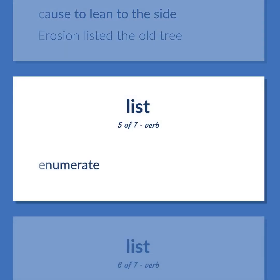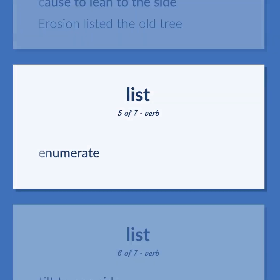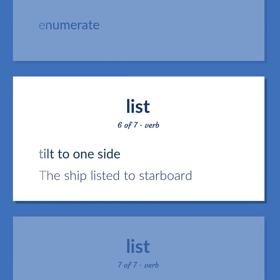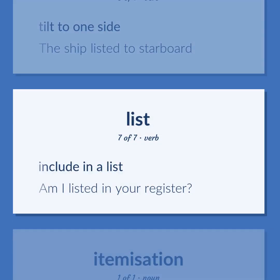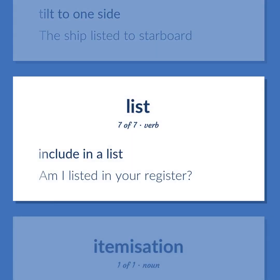List: Enumerate. Tilt to one side — 'The ship listed to starboard.' Include in a list — 'Am I listed in your register?'